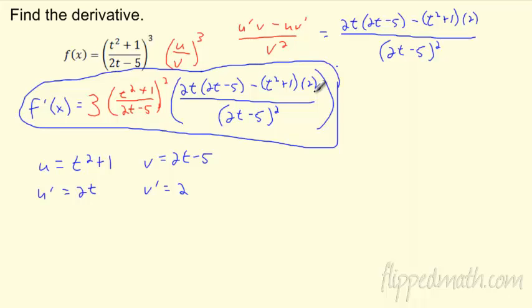If you want to clean it up, you could distribute up top a little bit, and maybe it's not that bad. But for now I'll leave it because it's kind of a hot mess. As long as you get the idea — we've got chain rule on the outside and a quotient rule on the inside.